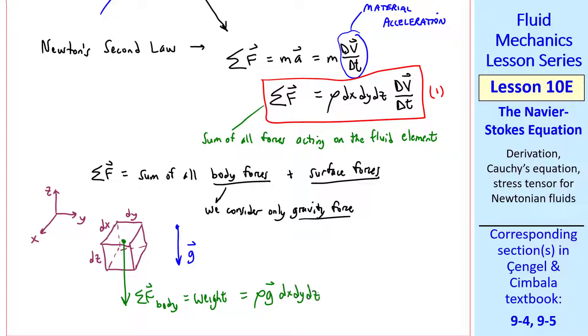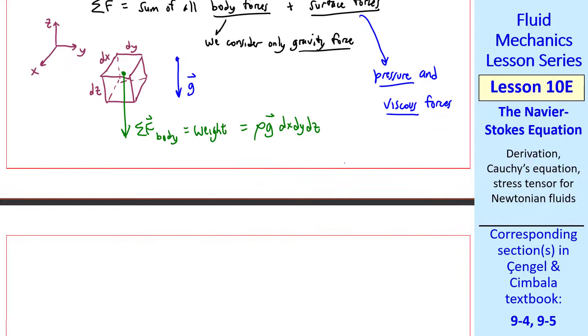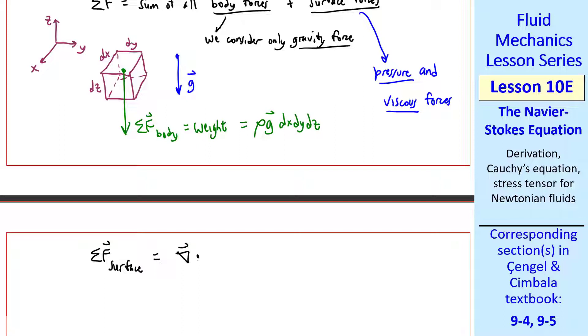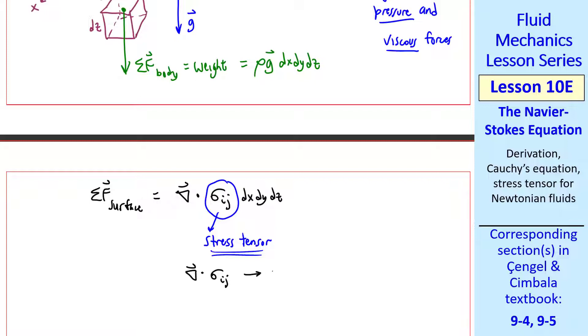The surface forces are a little trickier to calculate. They consist of pressure and viscous forces. I'll refer you to the text for the derivation. It turns out that sigma f surface is the dot product of the gradient vector and the stress tensor, sigma ij, times the volume of the fluid element. Sigma ij is the stress tensor, and this is a dot product. The dot product of the gradient vector with a second-order tensor yields a vector, which is consistent with our equation, since sigma f surface is also a vector.